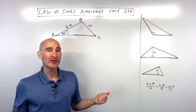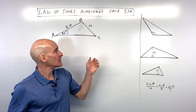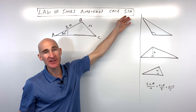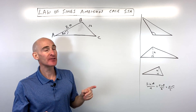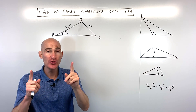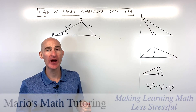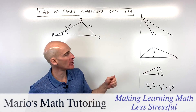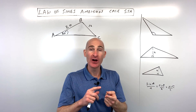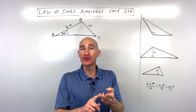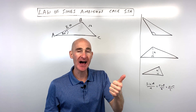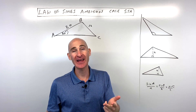In this video, you're going to learn how to solve triangles involving the ambiguous case — the side-side-angle case. Specifically, I'm going to show you a problem where there are two triangles possible and how to solve those triangles. But first, I want to show you how to identify if there's one triangle, two triangles, or even no triangle possible when they're giving you side-side-angle.